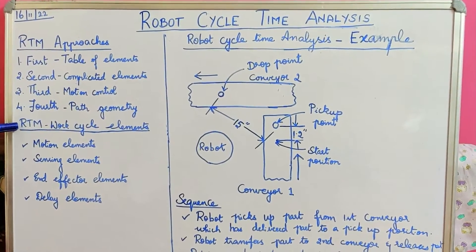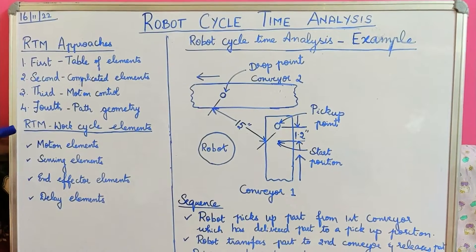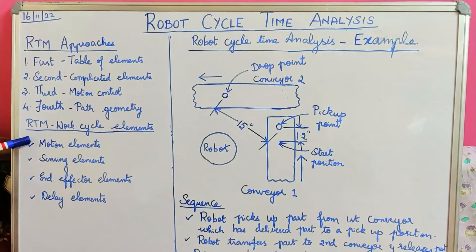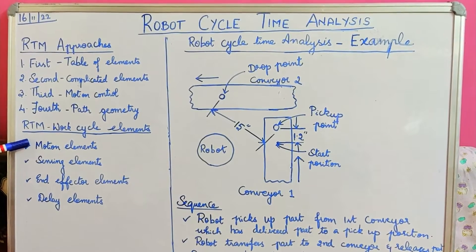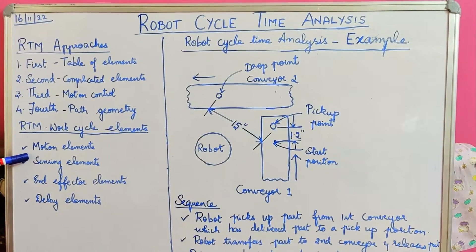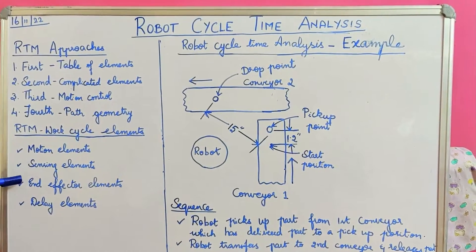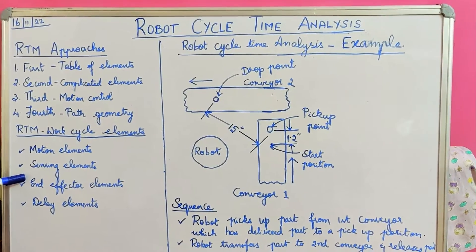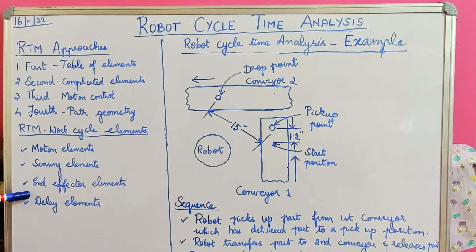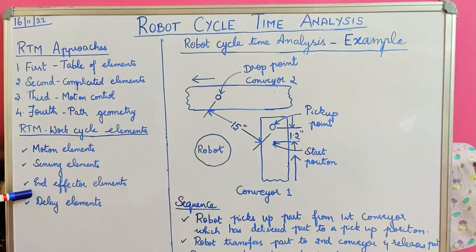There are work cycle elements in the RTM method, broadly categorized into four groups. First are motion elements, which describe manipulator movements performed with or without load. Second are sensing elements — sensory activities performed by the robot, such as vision sensing, force sensing, and position sensing. Third are end effector elements, relating to the action of the gripper or tool attached to the robot wrist. Fourth are delay elements, covering time delays resulting from waiting and processing conditions in the work cycle.